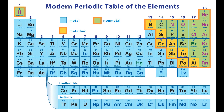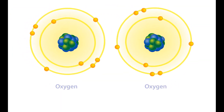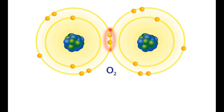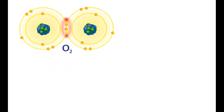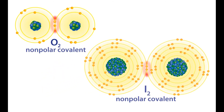There are two types of covalent bonding: nonpolar and polar. Nonpolar bonding results when two identical nonmetals equally share electrons between them. Diatomic molecules, such as oxygen or iodine, form nonpolar covalent bonds where both atoms share the electrons equally.